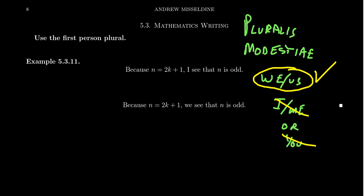In mathematics, the motivation is a little bit different. It's this plural modesty, this modest we is what we're using in the situation. And why do we do that?